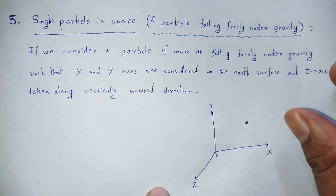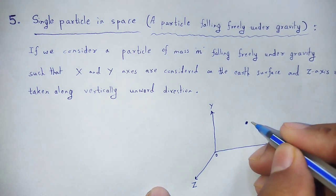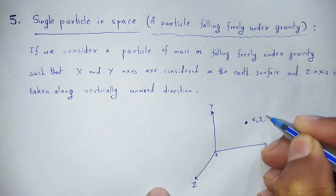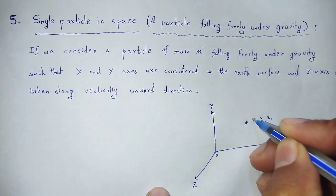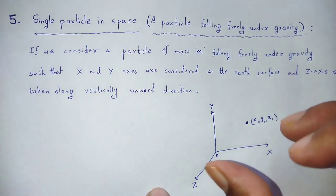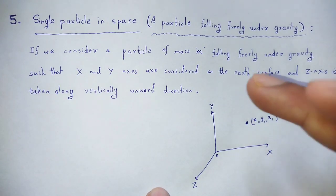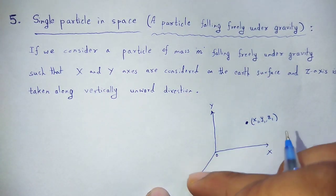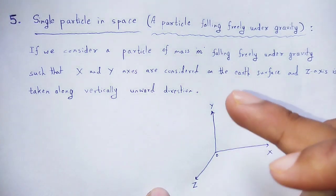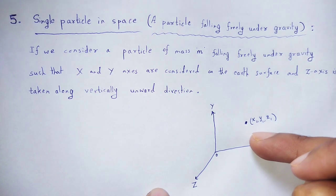I will represent the point using Cartesian coordinate representation x1, y1, z1 for that particular system. The particle has mass M, and the z-direction is considered as the vertically upward direction of motion.